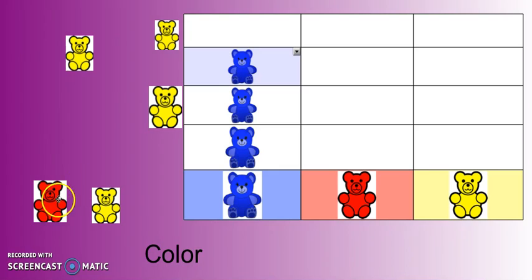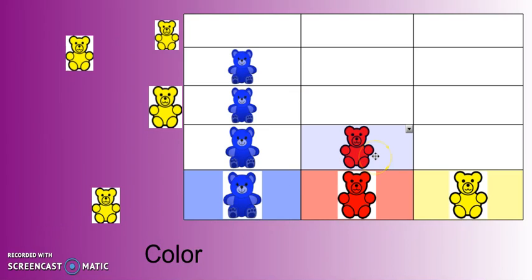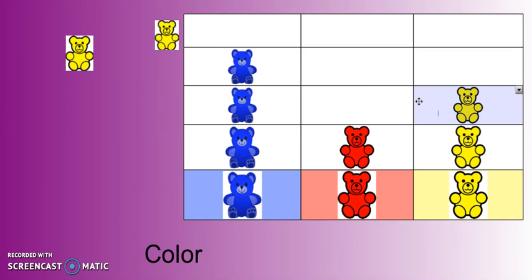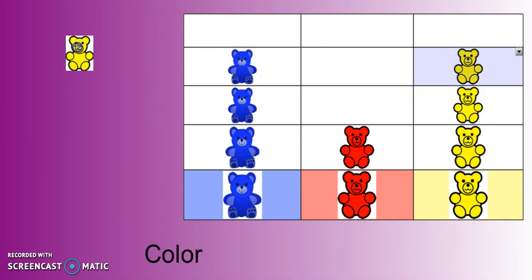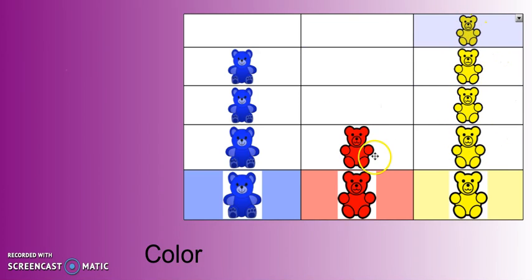Now let's group the red bears. One. We have one red bear. Now let's group the yellow bears. One, two, three, four. We have four yellow bears, one red bear, and three blue bears. This time we grouped our objects by color.